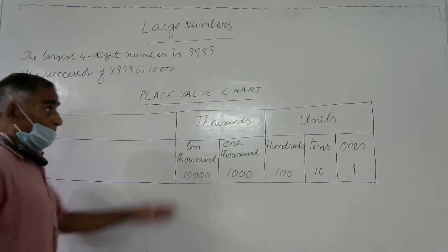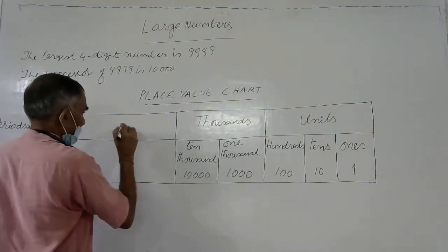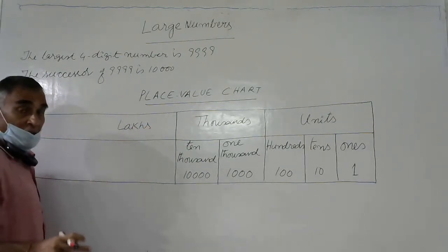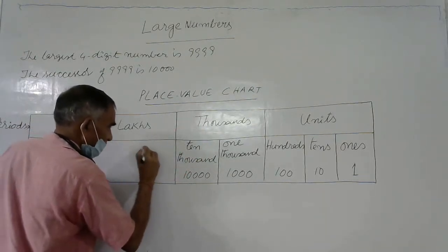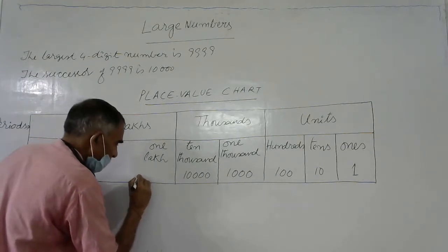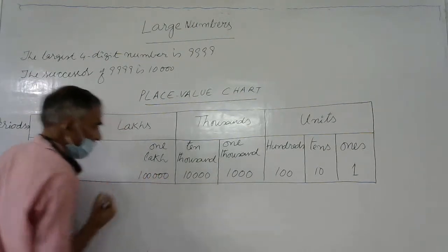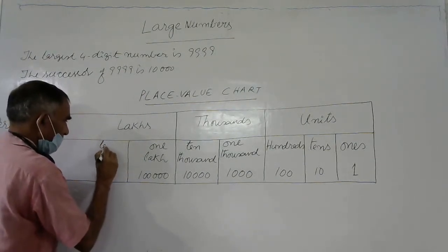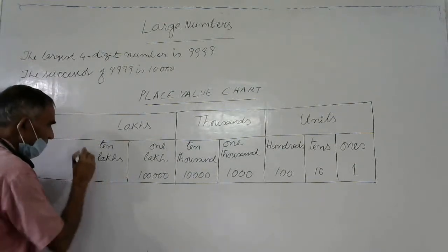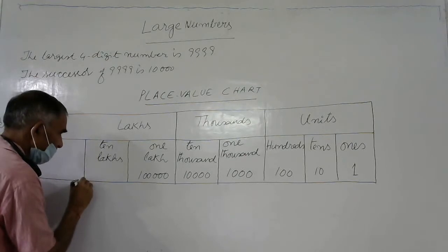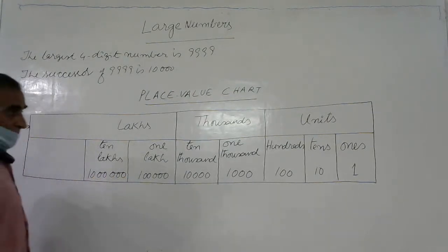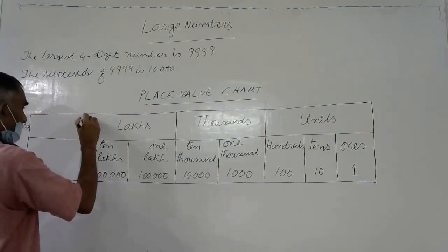After the thousands period, the next period is the lakhs period. This lakhs period also has two places, like thousands. One lakh is 1 followed by five zeros. The next place is ten lakhs, which is 1 followed by six zeros.